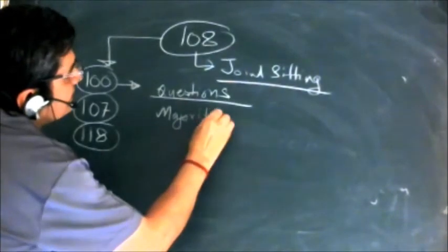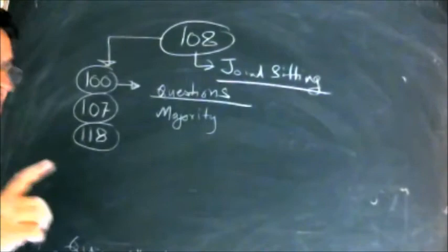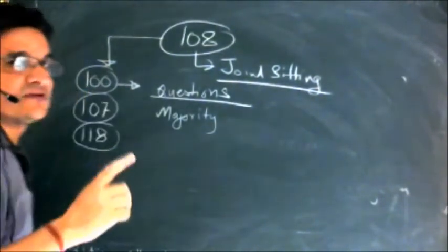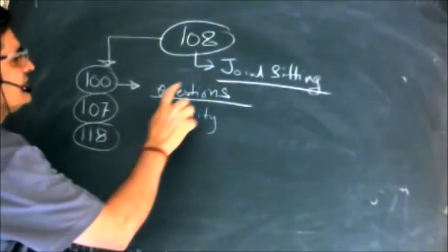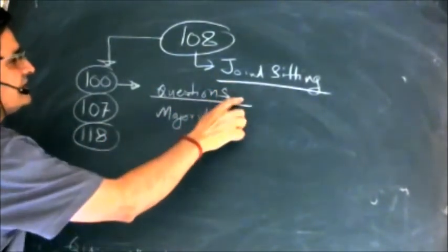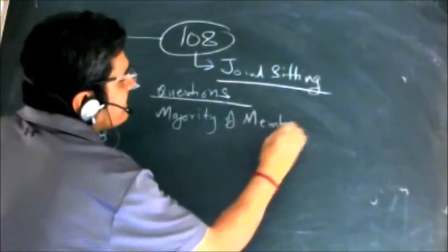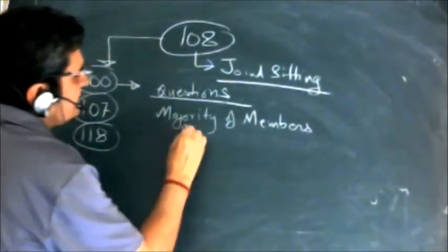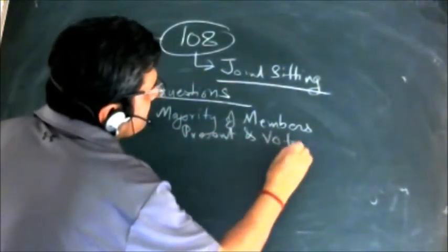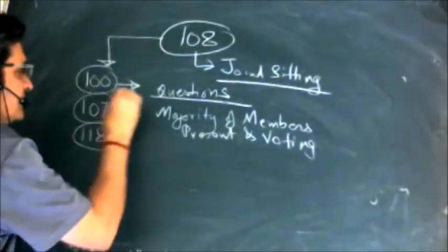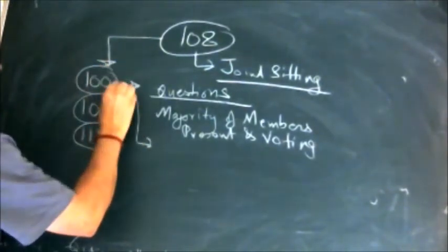It begins by saying 'save as otherwise provided in the constitution', which means there are exceptions where this kind of majority is not enough. Save as those exceptions, all questions shall be decided by majority of members present and voting.